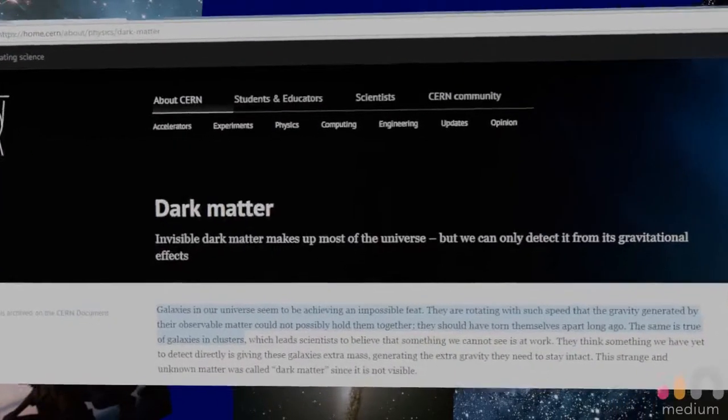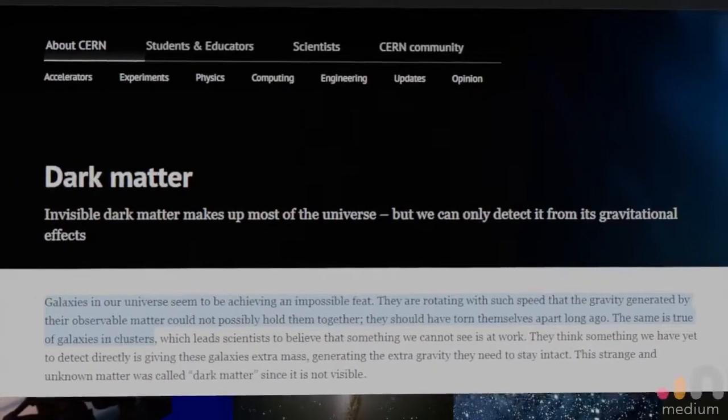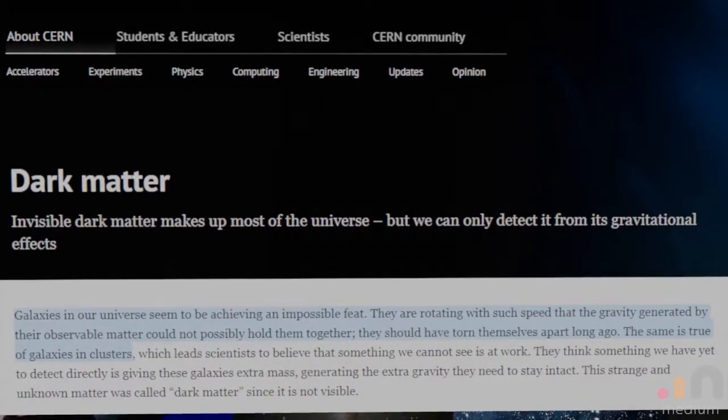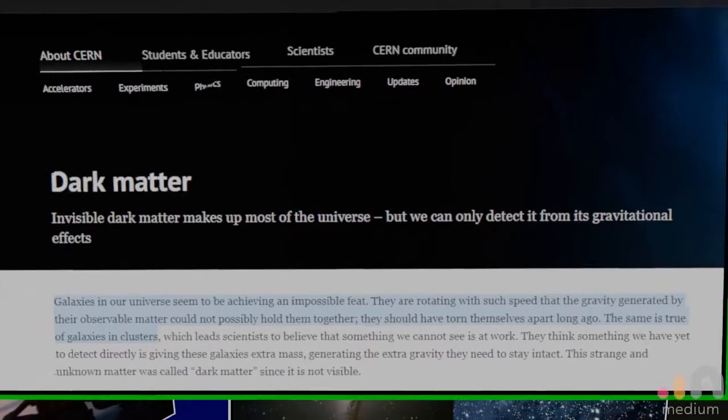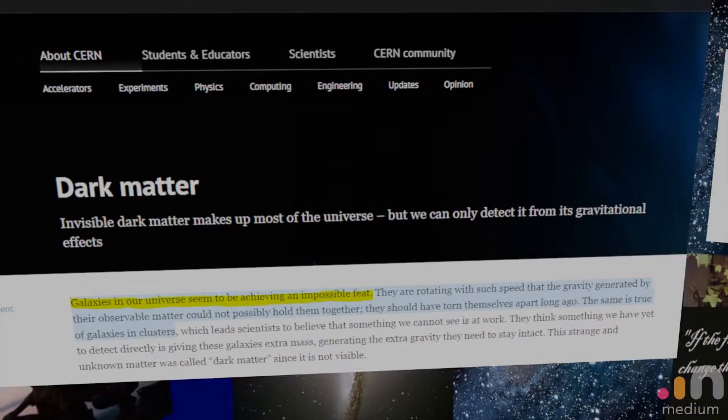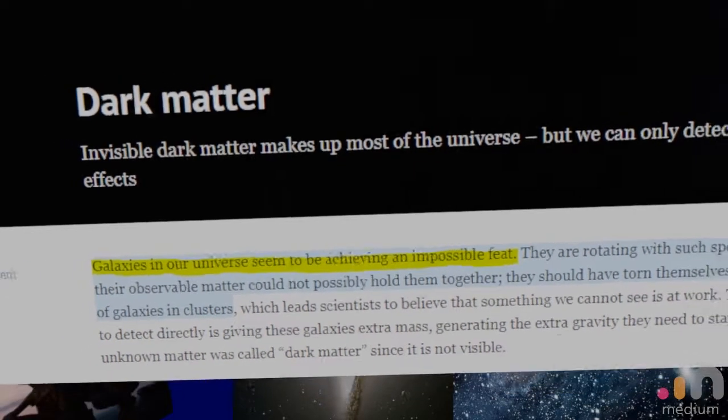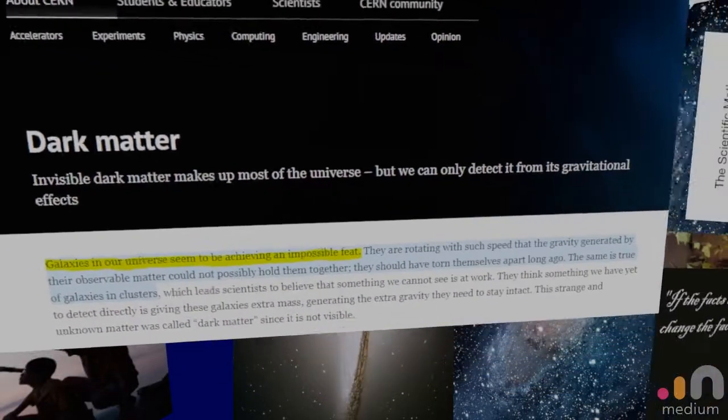Dark matter. Let's just read this right here. Galaxies in our universe seem to be achieving an impossible feat. They are rotating with such speed that gravity generated by their observable matter could not possibly hold them together. They should have torn themselves apart long ago. The same is true of galaxies in clusters. Let's revisit this first sentence. Galaxies in our universe seem to be achieving an impossible feat. You're describing nature as impossible.